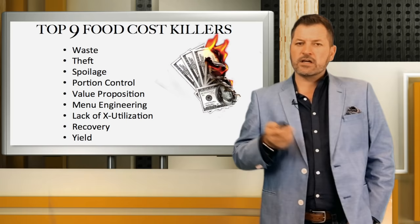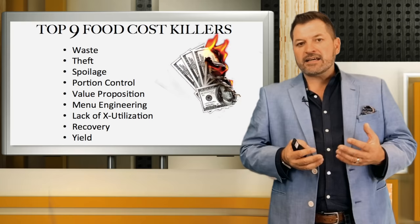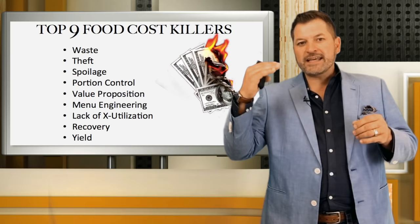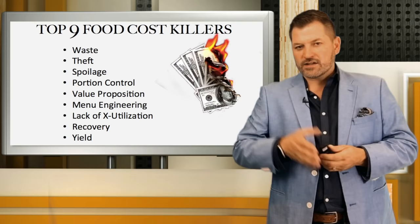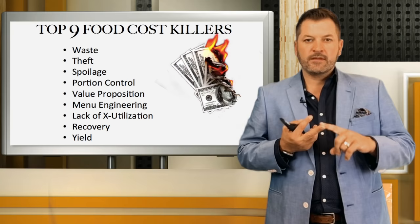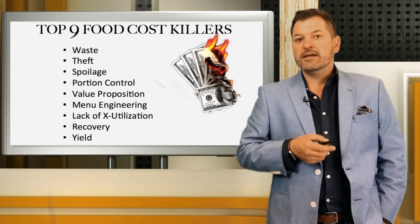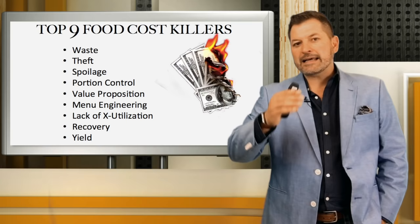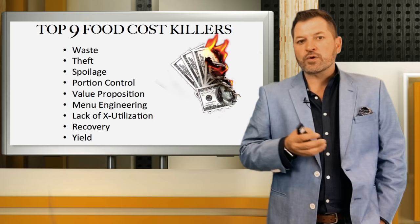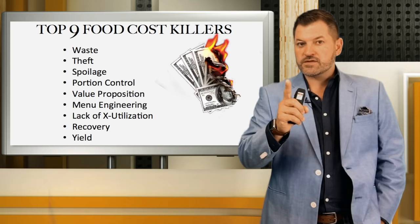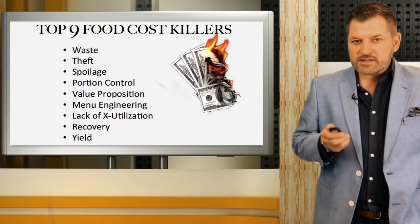Let's run through the nine things first and then break them down with detail and a takeaway for each. Number one: waste. Two: theft. Three: spoilage. Four — the biggest culprit of all: portion control. Then menu engineering, and an overlapping term called value proposition. Next: lack of or minimal cross-utilization. Then recovery. And finally: yield. Those are the nine. Let's break them down.